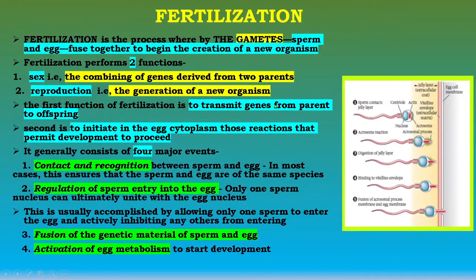Fertilization is a process whereby the gametes — that is, the male gamete, the sperm, and the egg — fuse together to begin the creation of a new organism. It performs two functions: first is sex, the combining of genes derived from two parents, and second is reproduction, the generation of a new organism. The first function is to transmit genes from parent to offspring, that is the progeny.